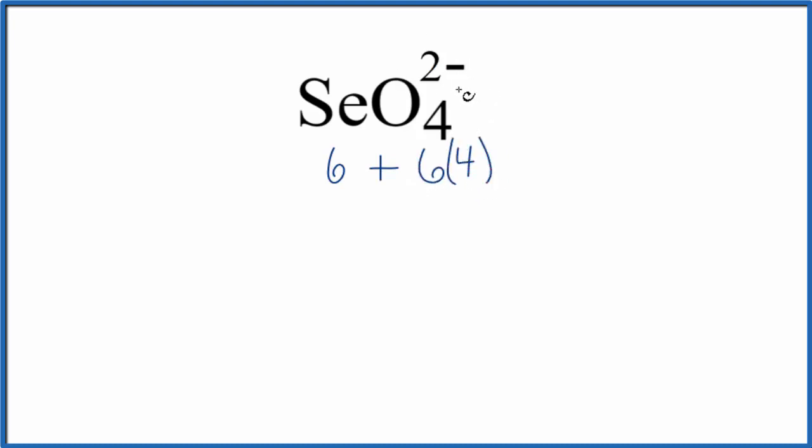And this 2- up here means we have 2 extra negative charges, 2 extra electrons. So we're going to add 2 more valence electrons. 6 plus 24 plus 2 is 32 total valence electrons for the SeO4 Lewis structure.